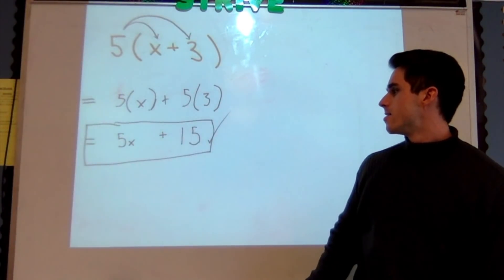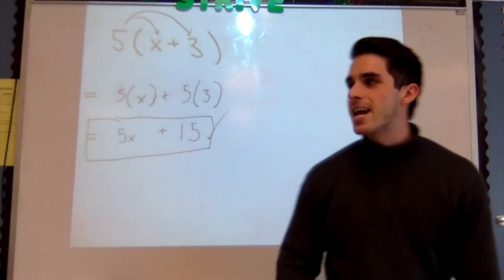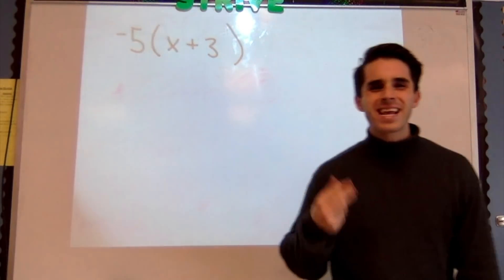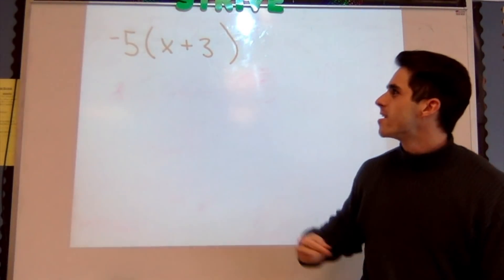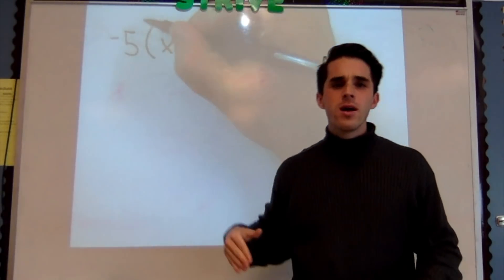All right, moving on to our next example, adding in a negative, making it a little bit trickier. I got -5(x + 3). Well I'm gonna do this the exact same way.